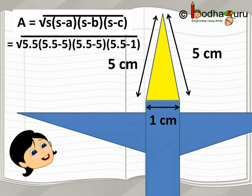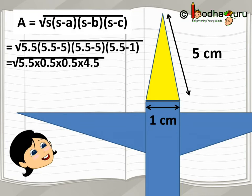Now, putting the values in Heron's formula, we get square root of 5.5 multiplied by 5.5 minus 5 multiplied by 5.5 minus 5 multiplied by 5.5 minus 1.